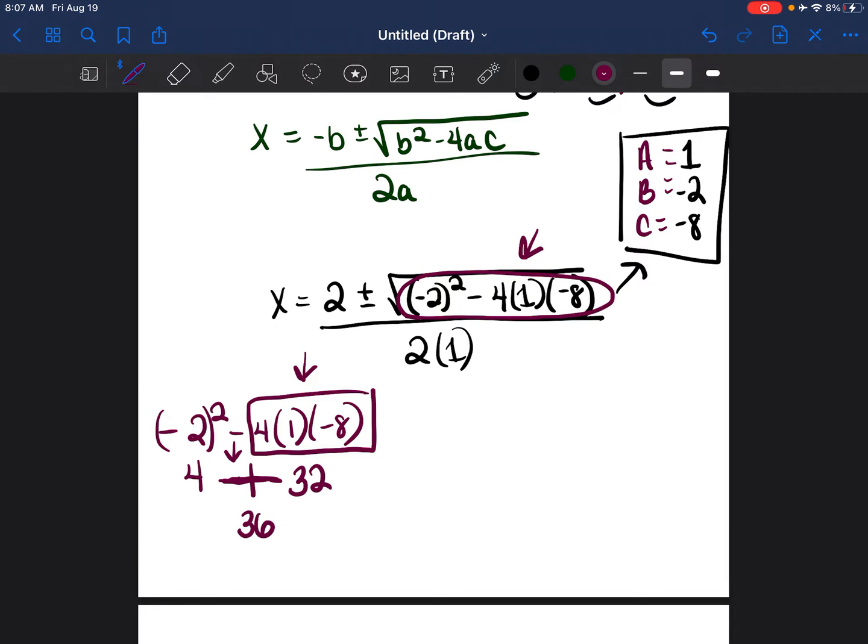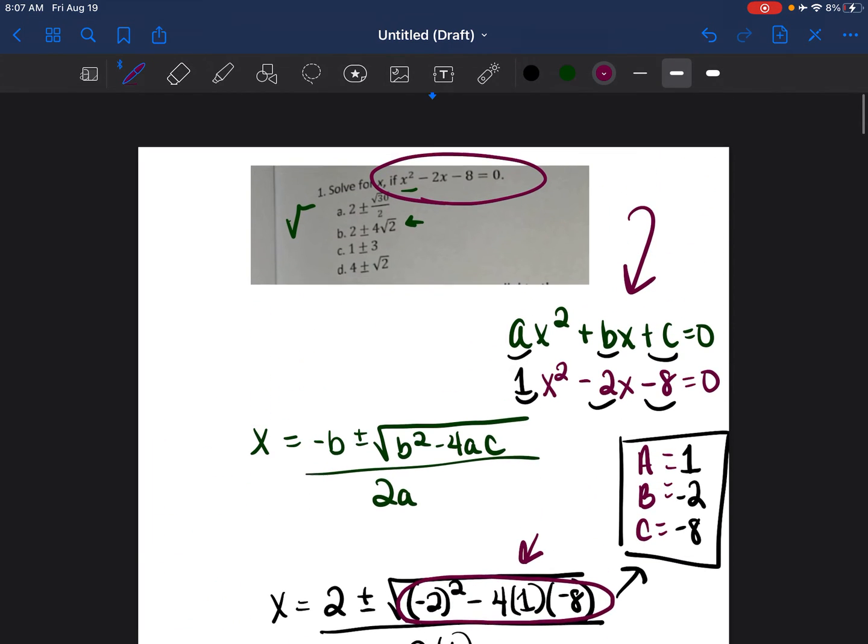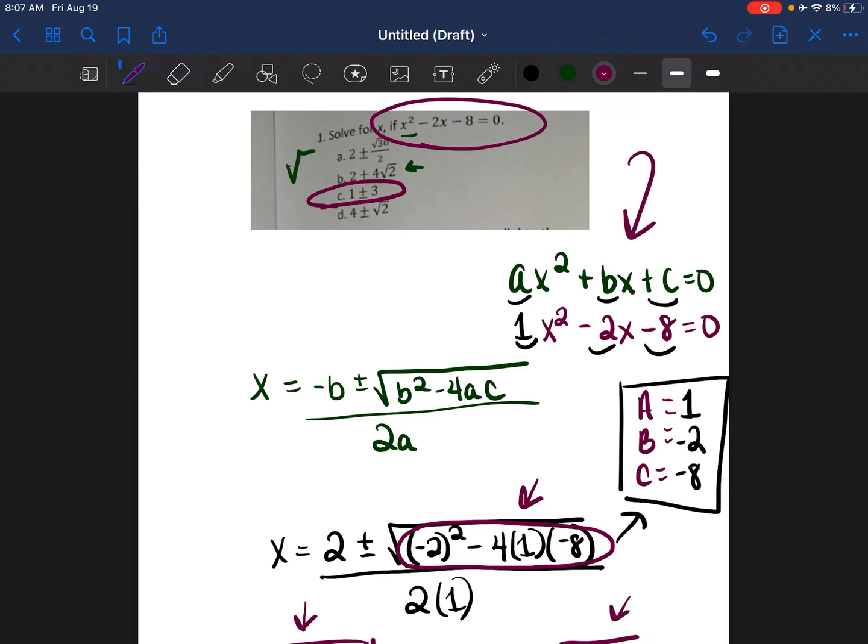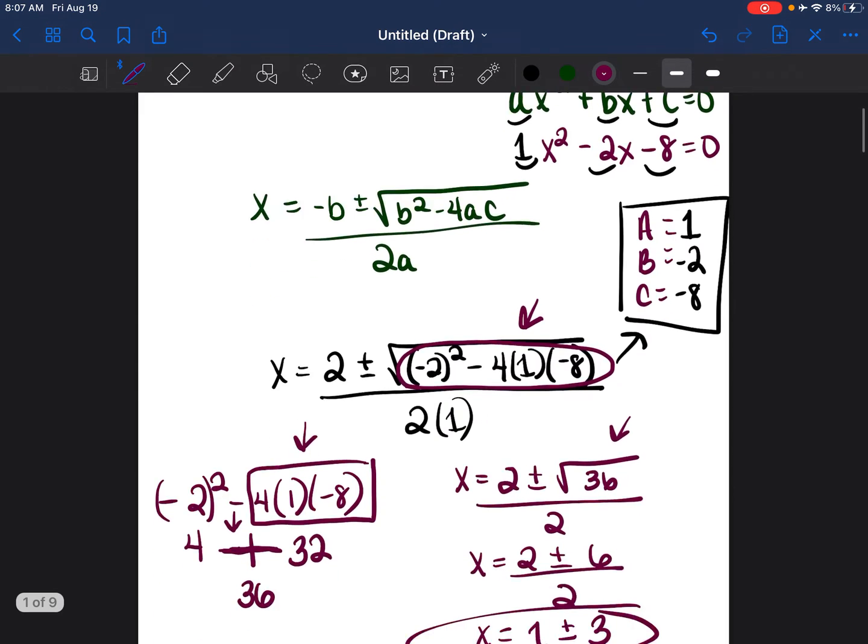So let's go ahead and write that. X is equal to 2 plus or minus the square root of 36 divided by 2. Now we know what the square root of 36 is. 6 times 6 is 36. So we can take X is equal to 2 plus or minus 6 divided by 2. And then we can reduce this even further. 2 divided by 2 is 1 plus or minus 6 divided by 2 is 3. So X is equal to 1 plus or minus 3. So we can see that our answer is going to be C. Let's go ahead and move on to the next problem.